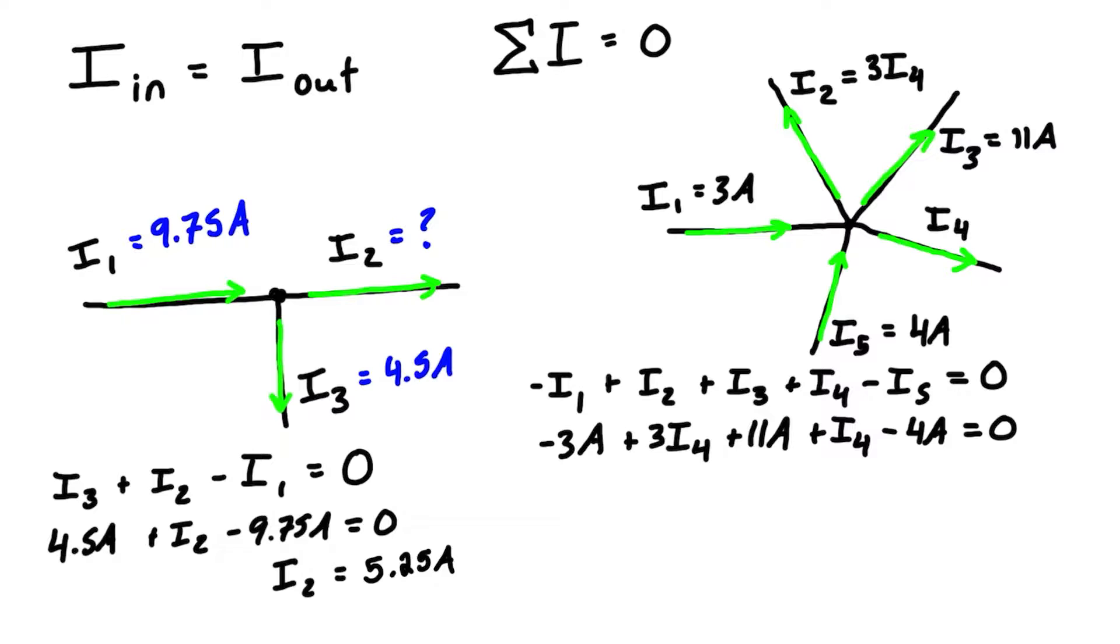We can simplify a little bit. We have 3i4 + 1i4, that gives us a total of 4i4. And then we have 11 amps - 4 amps - 3 amps for a total of 4 amps as well, so that is +4 amps, and that equals zero. We can just rearrange that so we have i4 = -4 amps / 4.